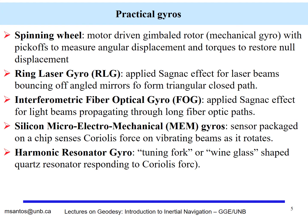The spinning wheel is the mechanical gyro that we usually talk about. There are different types of gyros that use the Sagnac effect, like the ring laser gyro and the fiber optical gyro. And there are other gyros that use the Coriolis force, like the MEMS gyros and the harmonic resonator gyro.